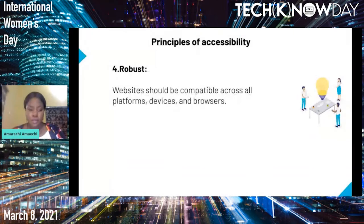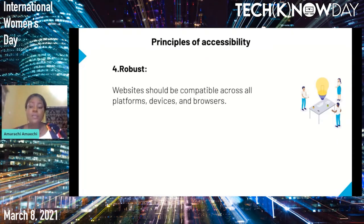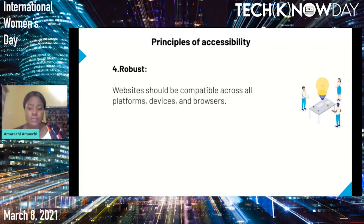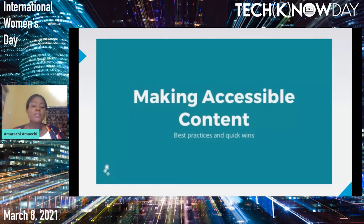The fourth and last principle of accessibility is robust. Websites should be compatible across all platforms, devices, and browsers. Web content should be compatible with current and future software, and a wide range of technologies should be able to access the content without any limitation. One of the best ways to meet the principle of robustness is to be consistent and follow standards and conventions when building for users.